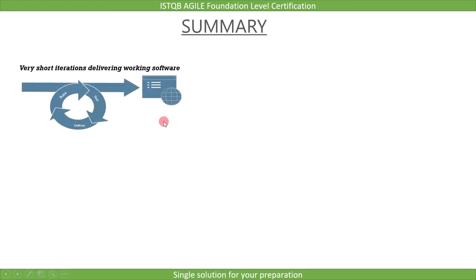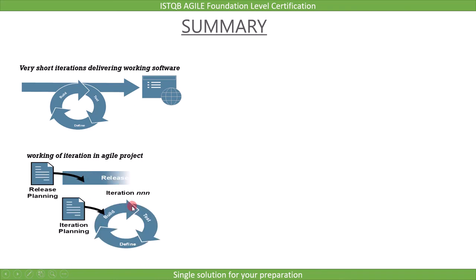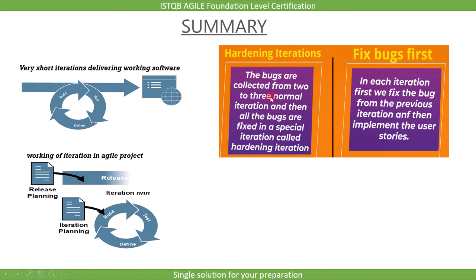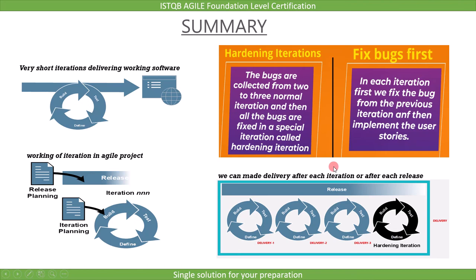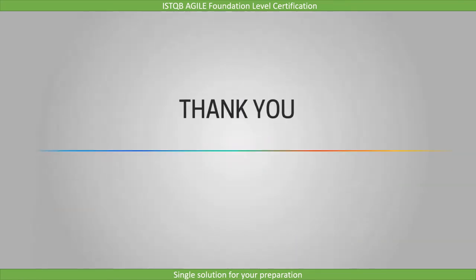To recap, we discussed the development activities of the agile model — how we get working software early, how iteration works in an agile project, and two different approaches: the hardening iterations approach and the fix bugs first approach. We also saw how delivery can occur after each iteration or after each release. In the next lecture, we will cover testing activities of an agile project. See you next time. Thank you.